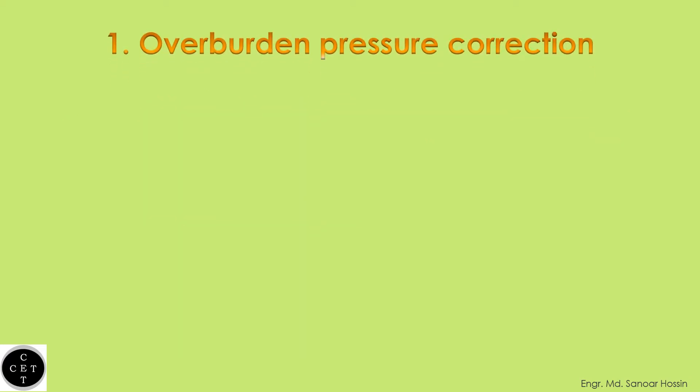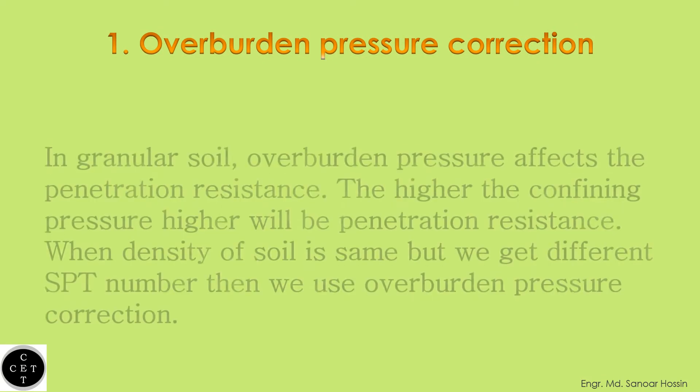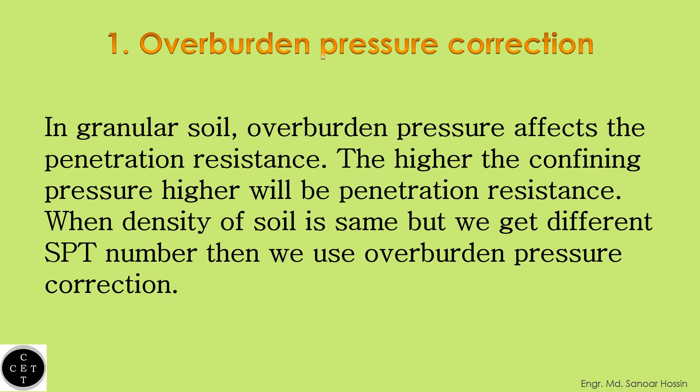Overburden pressure correction. In granular soil, overburden pressure affects the penetration resistance. The higher the confining pressure, the higher will be the penetration resistance. When the density of soil is the same but we get different SPT numbers, then we use overburden pressure correction.